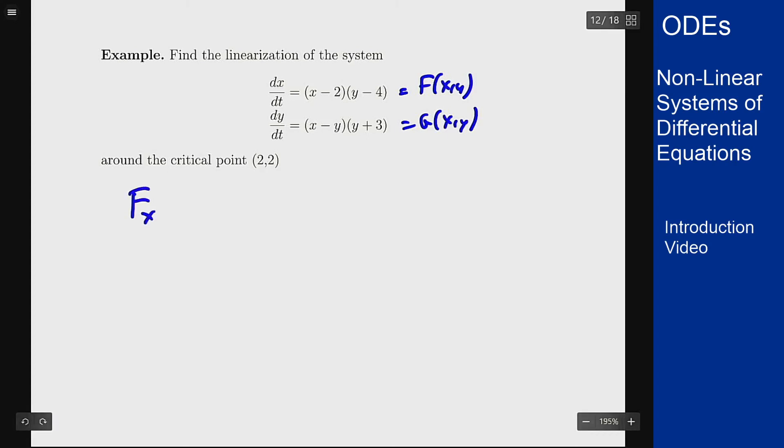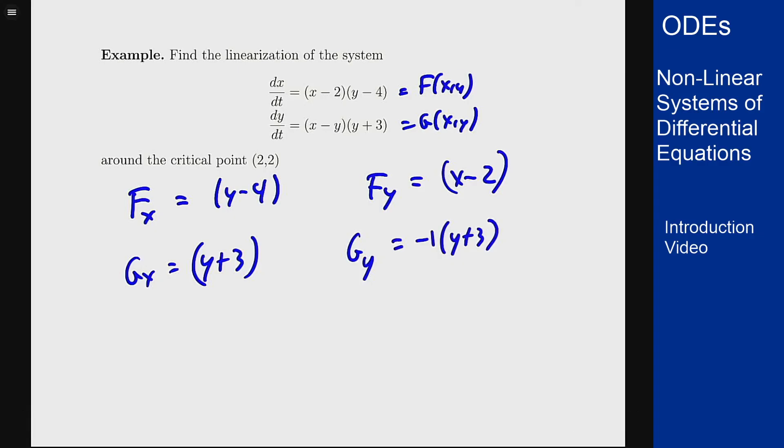The partial derivative fₓ is y-4, because I get a 1 from the first term and differentiating the second gives 0. f_y is x-2. gₓ is y+3. For g_y I get a product rule: -1·(y+3) + (x-y)·1.